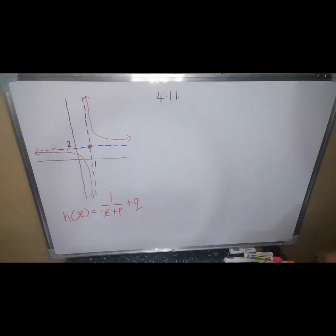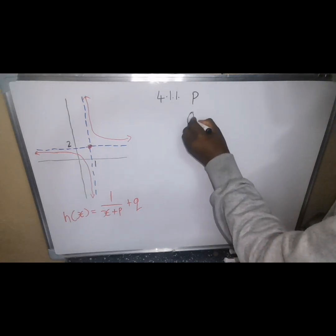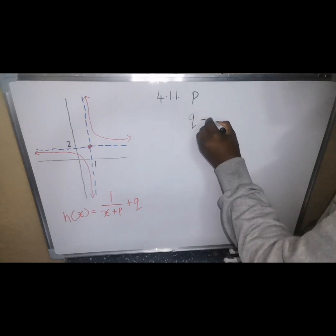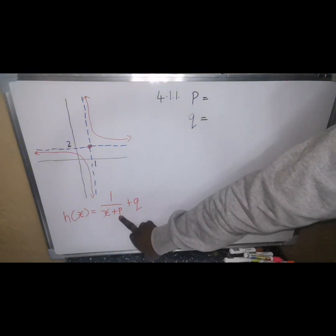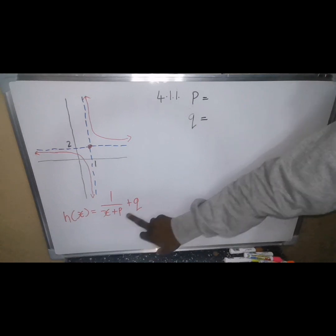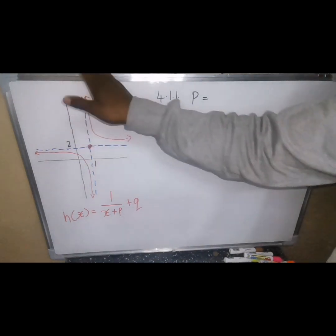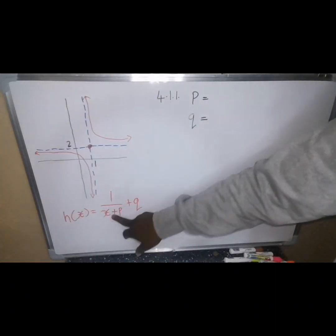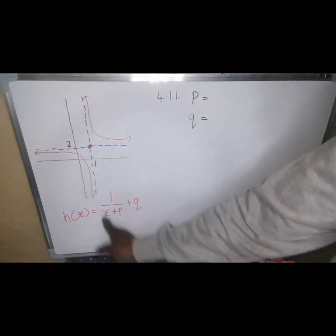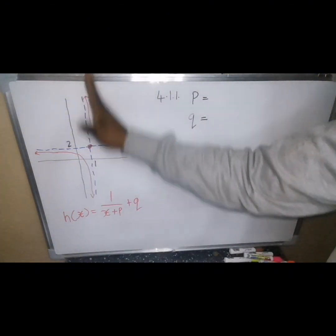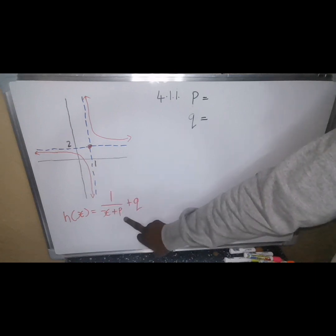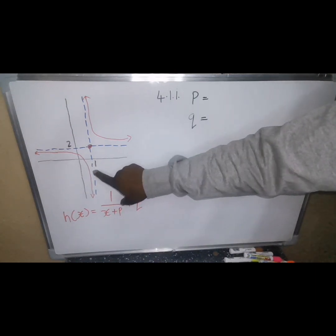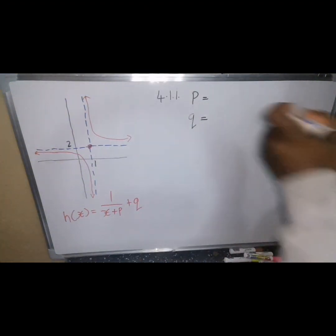Question 4.1.1 asks you to write down the value of p and the value of q. From the equation, you need to recognize that p represents the vertical asymptote and q represents the horizontal asymptote. From the graph, the vertical asymptote corresponds to p and comes inside the bracket, so the sign changes. The equation reads x minus 1, not x plus 1, so the value of p is negative 1.